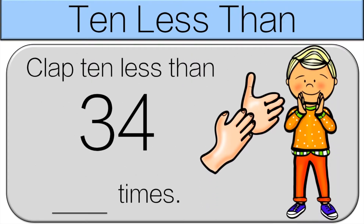Clap 10 less than 34 times. So you have to figure out what 10 less than 34 is. Think about it. We're going to go over it together, and then you'll clap. So we're taking away 10 from 34. Let's look at the tens column, which is a 3 — it's going to change into a 2, so 24. Clap 24 times.